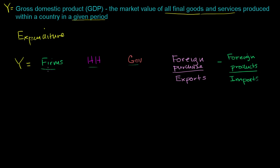So if we think about all the final goods and services produced in a country in a given time — what firms spent money on, plus all the goods and services that households spent money on, plus the goods and services that government spent on, plus all the goods and services purchased by foreigners (the exports) — and then we subtract out the goods and services that other countries produce (the imports) — this gives you a pretty good measure of all goods and services produced within a country.